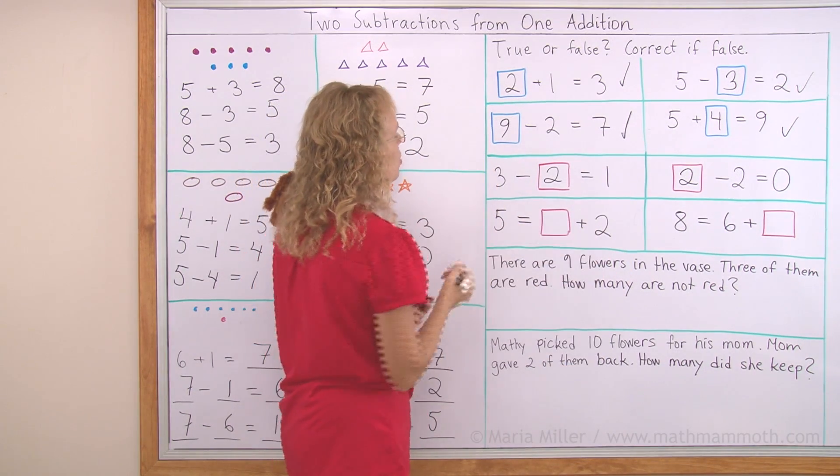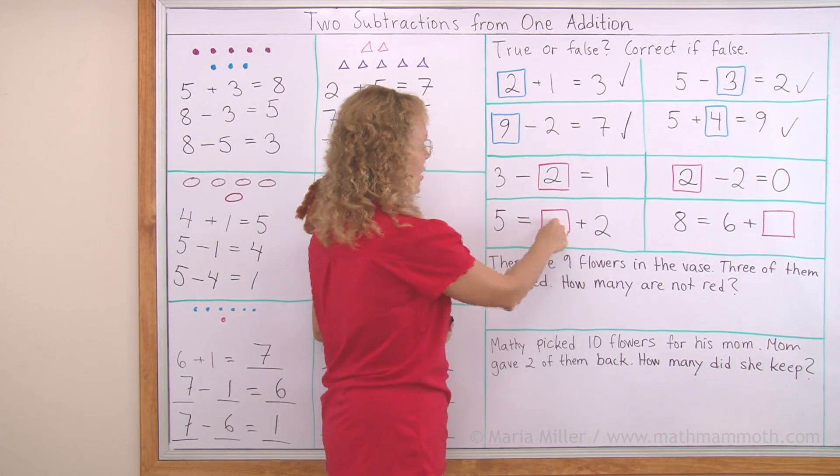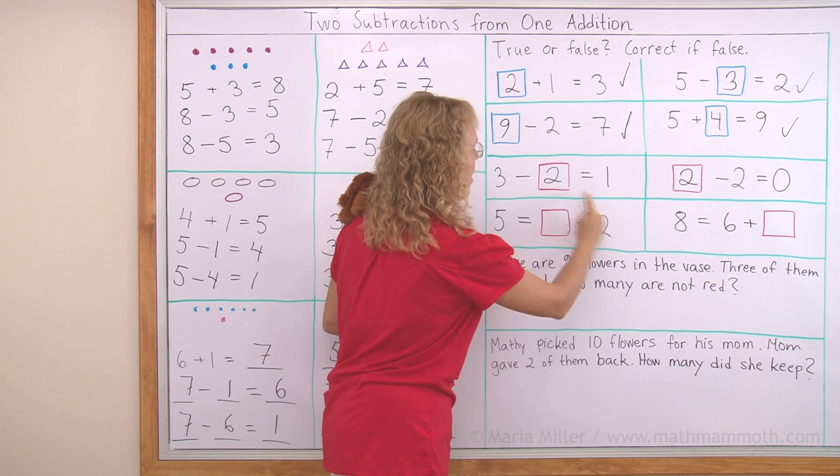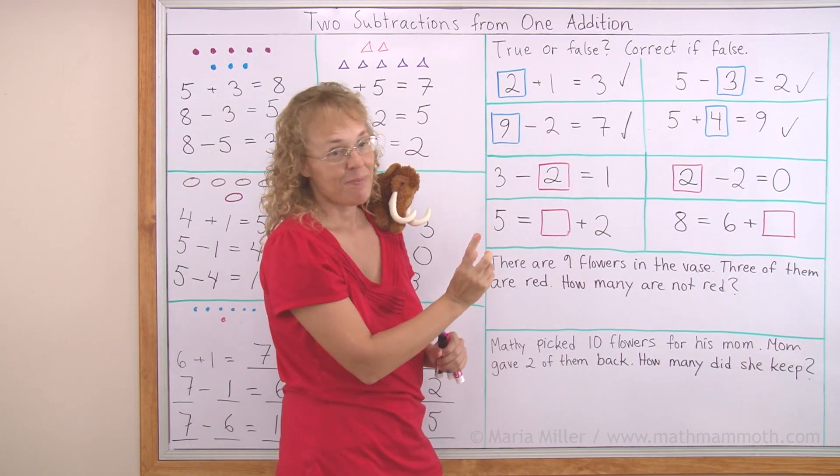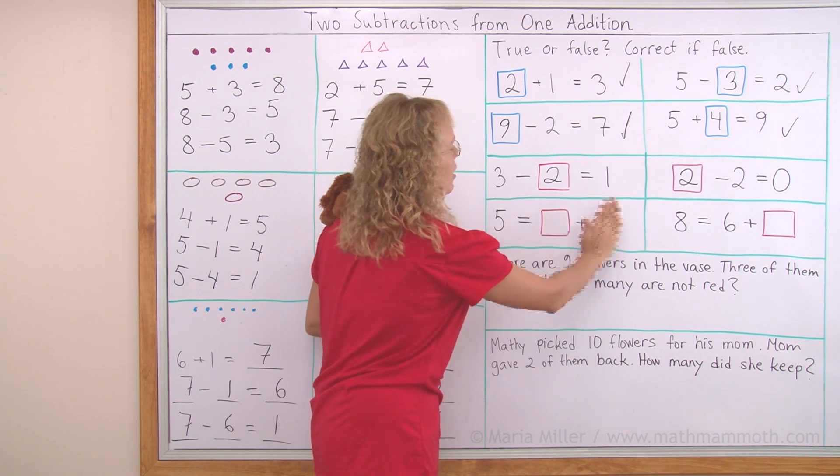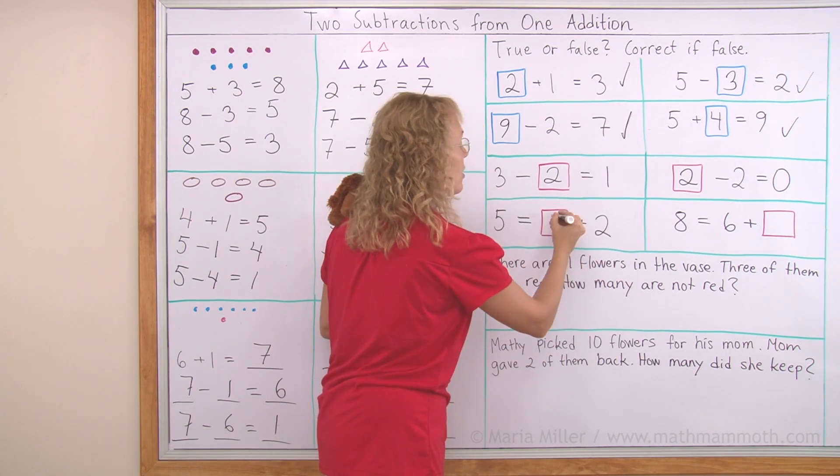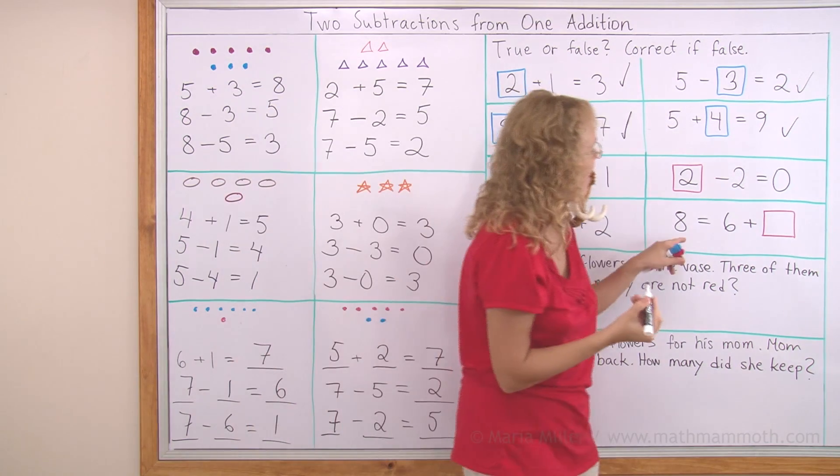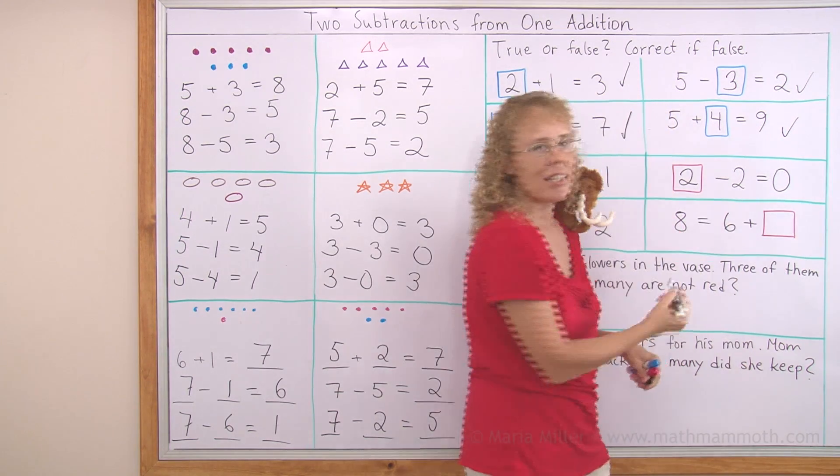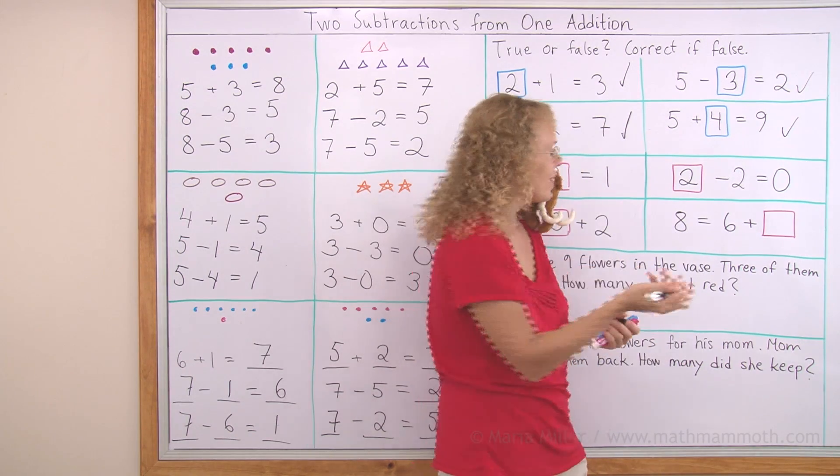Five equals something plus two. Some children get confused and they think this means five plus two, and seven goes there. But that's not true, because seven plus two, this would make nine, and five is not equal to nine. You need to think of it as this side here. This is the equal sign, and on the right side of the equal sign needs to be five in total. This here together needs to make five, so three is the answer. Same here, eight equals six plus something. Six plus something on this side of the equal sign needs to equal eight. This is the same as six plus some number equals eight. The answer is two.